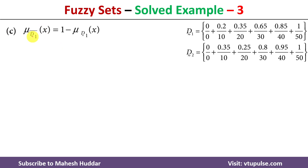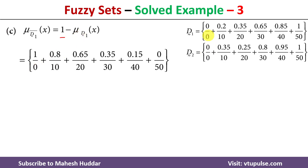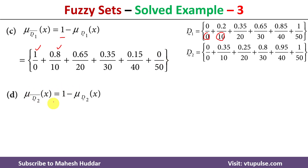Now for the D1 complement: the membership value of x in D1 complement is equal to 1 minus the membership value in D1. For element 0, the membership value is 0, so 1 minus 0 equals 1. For element 10, the membership value is 0.2, so 1 minus 0.2 equals 0.8, and similarly for the remaining elements.